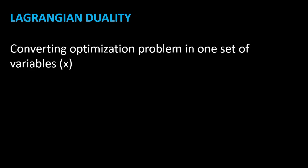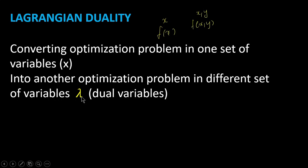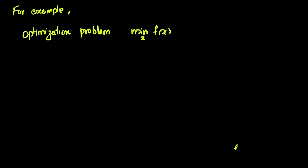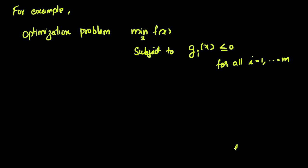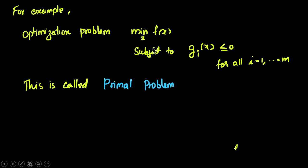Lagrangian duality means converting an optimization problem in one set of variables to another optimization problem with a different set of variables called lambda. We have seen functions f(x) or f(x,y) — here the variables are x and y. We can convert this optimization problem to another with a different set of variables called lambda, the dual variables. The original problem — minimize f of x subject to g_i(x) ≤ 0 for all i — is called the primal problem, and x is called the primal variable.